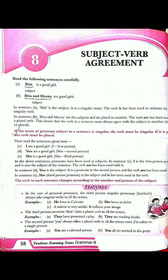Now let us move on with your textbook. If the noun or pronoun subject in a sentence is singular, the verb must be singular. If it is plural, the verb must be plural. This is exactly what is called subject verb agreement. Most students, when they write, make most of their mistakes here — in subject verb agreement.